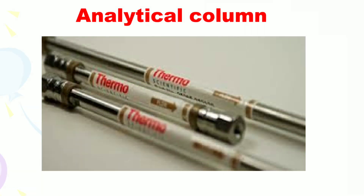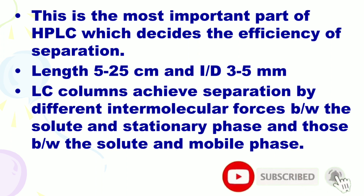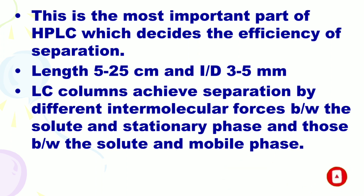Next is the analytical column. This is the most important part of the HPLC which decides the efficiency of separation. The length is 5 to 25 cm and the internal diameter is 3 to 5 mm. LC columns achieve separation by different intermolecular forces between the solute and stationary phase and those between the solute and mobile phase.